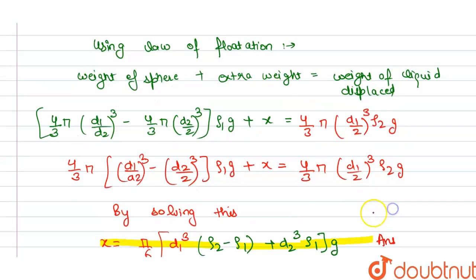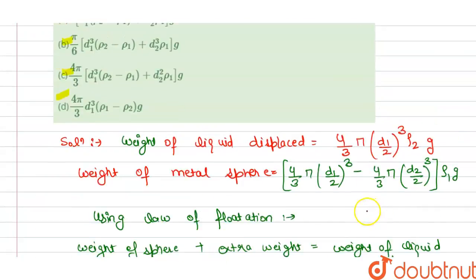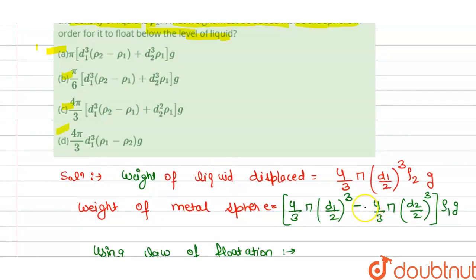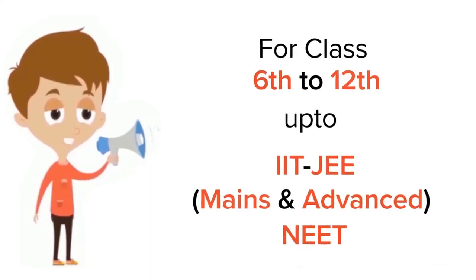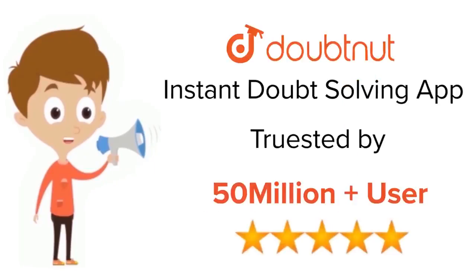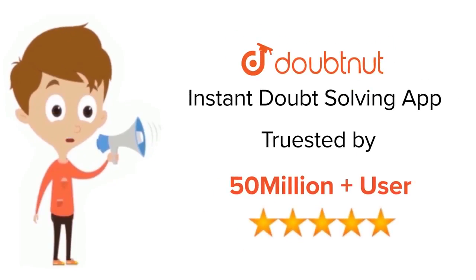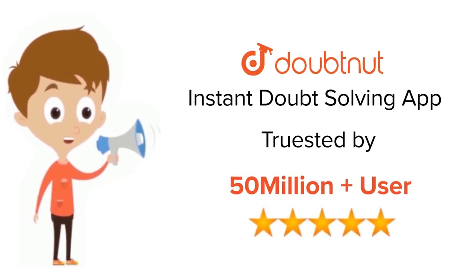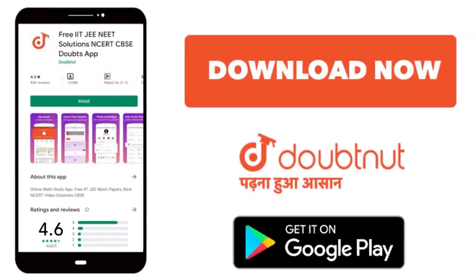Checking the options, option B is correct. For class 6–12, IIT JEE and NEET level, trusted by more than 5 crore students — download the DoubtNet app today.